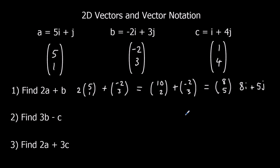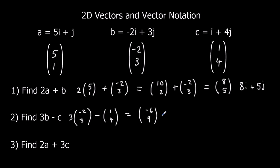The second one: 3B take away C. So we've got 3 of the (-2,3)'s, take away (1,4). 3 times (-2,3) gives (-6,9), and we're taking away (1,4). For the i's: -6 take away 1 is negative 7. For the j's: 9 take away 4 is 5. So we've got (-7, 5), or minus 7i plus 5j.